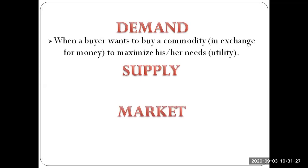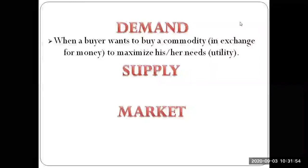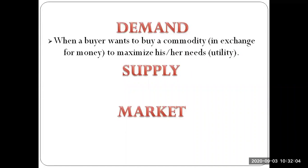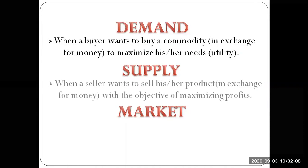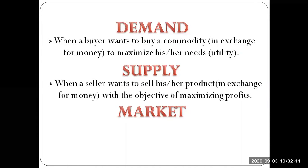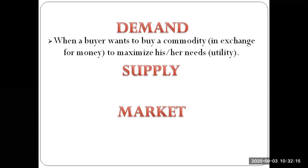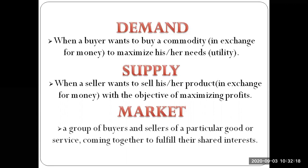When we talk about demand, we essentially say that a buyer wants to buy a commodity to maximize his or her utility. The buyer will buy that commodity in exchange for money, losing some amount of money to get that commodity, which needs to have some utility that satisfies the buyer's needs or desires. The next term is supply — a seller wants to sell his or her product in exchange for money, and the seller will always try to maximize his or her own profits.